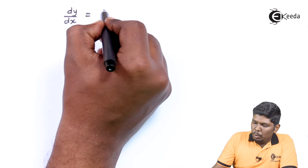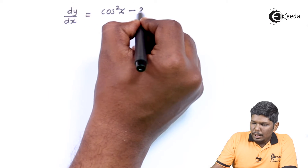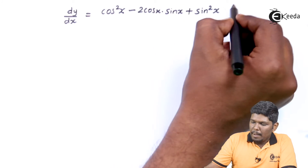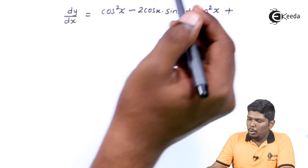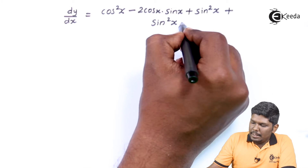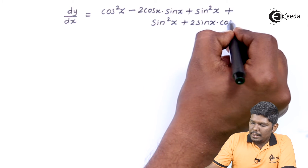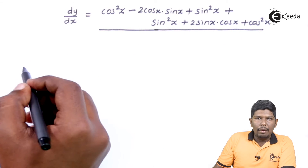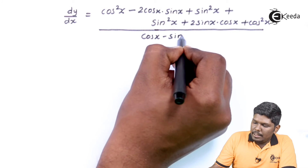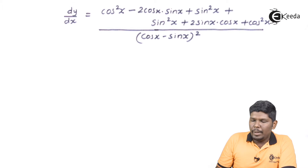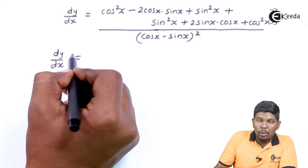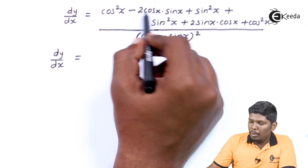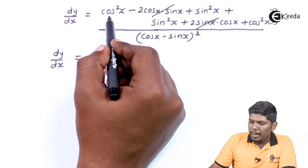cos x minus sin x the whole square gives cos squared x minus 2 cos x sin x plus sin squared x. And sin x plus cos x the whole square gives sin squared x plus 2 sin x cos x plus cos squared x, divided by cos x minus sin x the whole square. The terms minus 2 cos x sin x and plus 2 sin x cos x are the same but with opposite signs, so they cancel each other.